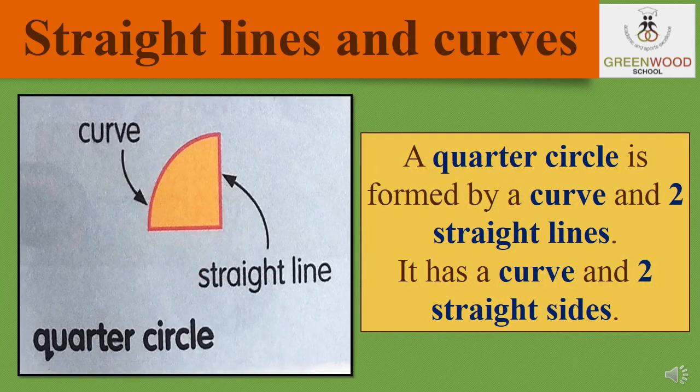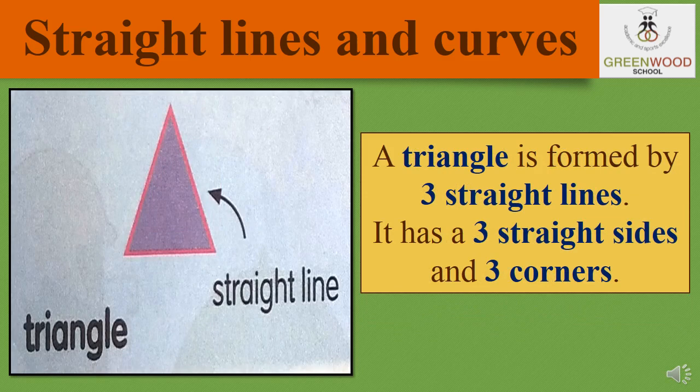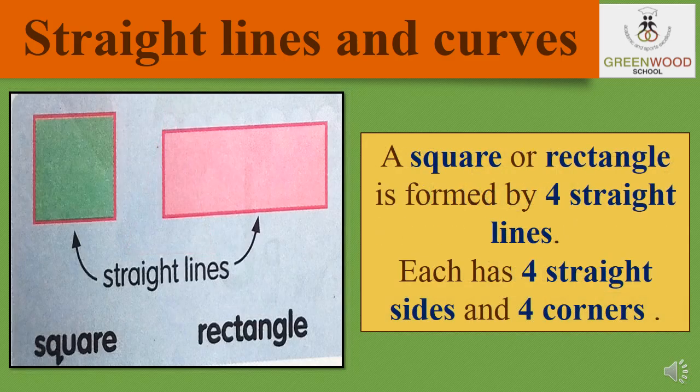The third one is quarter-circle. A quarter-circle is formed by a curve and two straight lines — it has a curve and two straight sides. The fourth one is triangle. A triangle is completely made of straight lines — three straight sides and three corners. The last ones are square and rectangle. A square or rectangle is formed by four straight lines, each has four straight sides and four corners. These shapes don't have any curves.